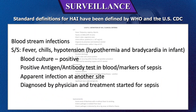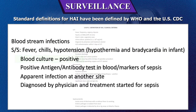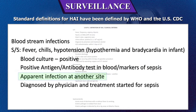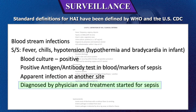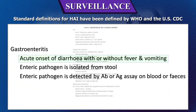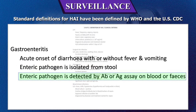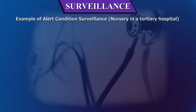Bloodstream infections: signs and symptoms of fever, chills, hypotension; in infants, hypothermia and bradycardia; blood culture positive; positive antigen-antibody test on blood; no apparent infection at another site; diagnosed by physician with treatment started for sepsis. Gastroenteritis: acute onset of diarrhea with or without vomiting and fever; enteric pathogen isolated from stool or detected by antibody or antigen assay on blood or feces.